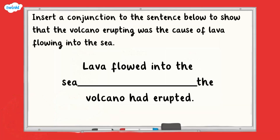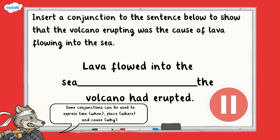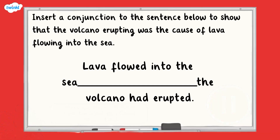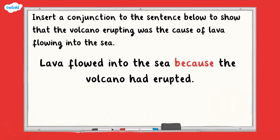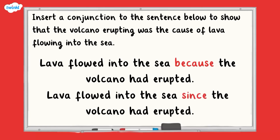Take a look at this question. Here you are being asked to add a conjunction to the sentence to show that the volcano erupting was the cause of lava flowing into the sea. You could have: lava flowed into the sea because the volcano had erupted. Or, lava flowed into the sea since the volcano had erupted. Both the conjunctions because and since express that the cause of the lava flow was the volcano erupting.